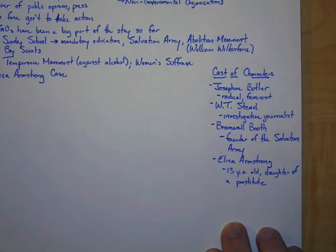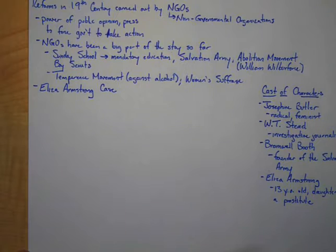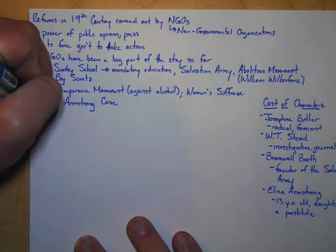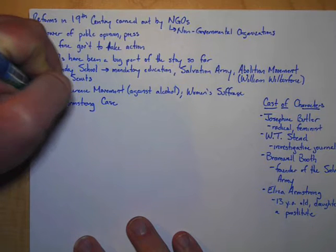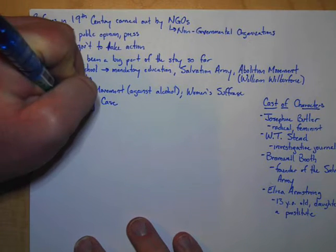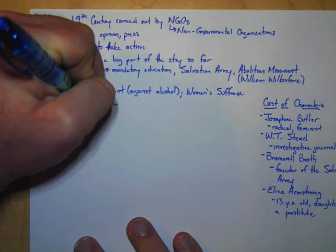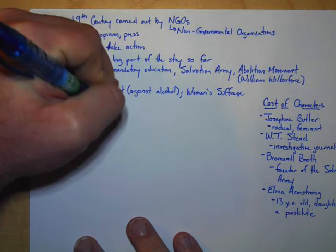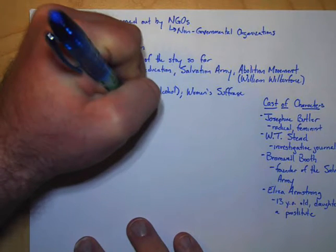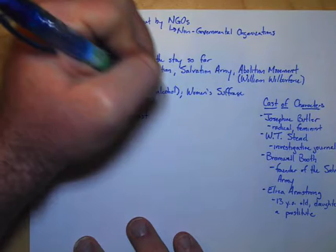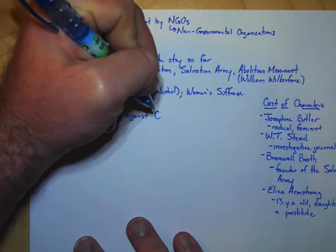Okay, so now let's tell the story because this is an extraordinary story. So the story starts with Butler. Josephine Butler was campaigning against this law called the Contagious Diseases Act.